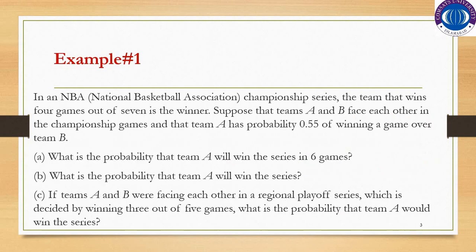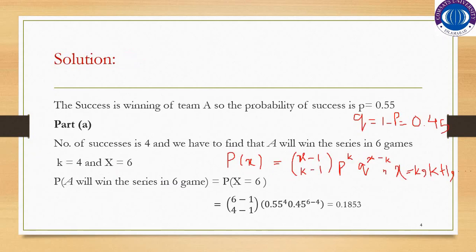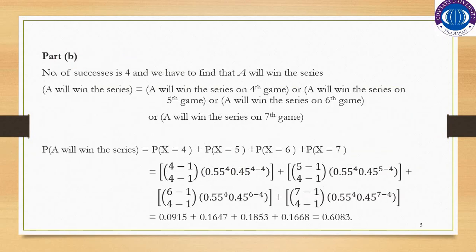Part B asks: what is the probability that Team A will win the series? In Part A, we found the probability of winning in exactly 6 games. Now we need the overall probability that Team A wins the series. The number of successes K is still 4, as Team A must win 4 games to be declared winner.